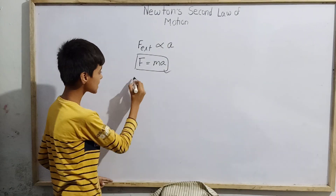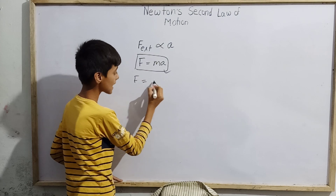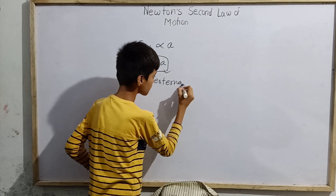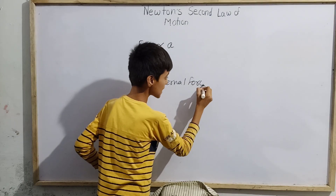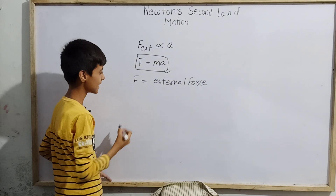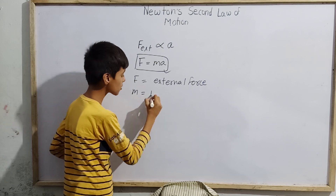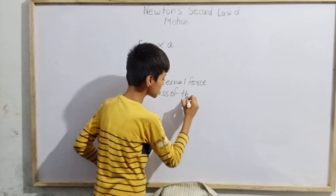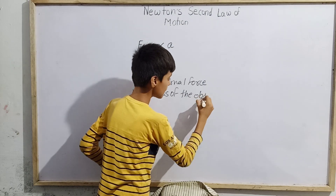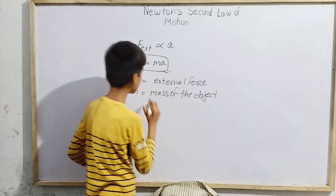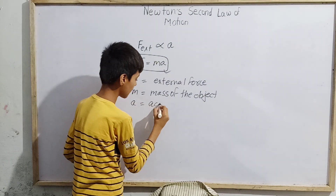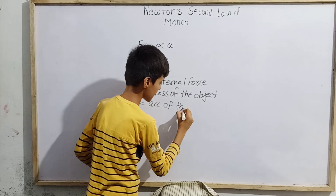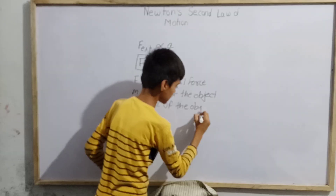In this formula: F is the external force applied over any object from any direction of any magnitude; M is the mass of the object; and A is the acceleration of the object.